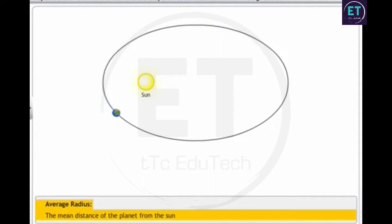For example, suppose r1, r2, and so on are the distances of earth from the sun for n number of positions of earth in its orbit. Then the average radius of earth's orbit can be calculated as shown.